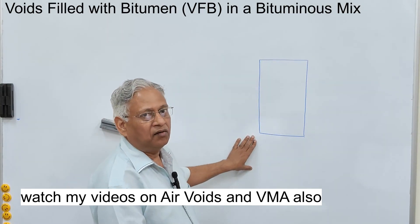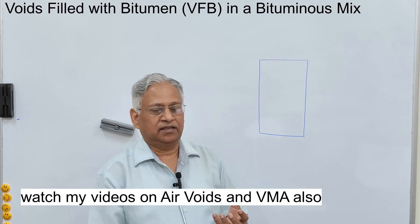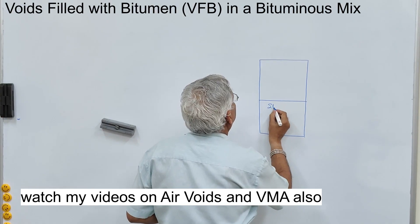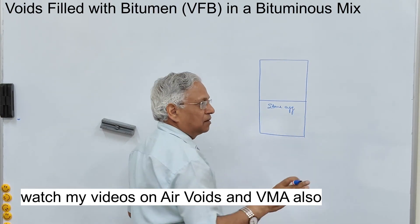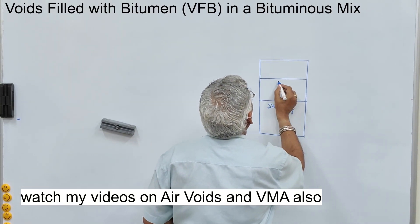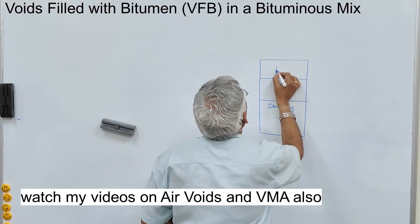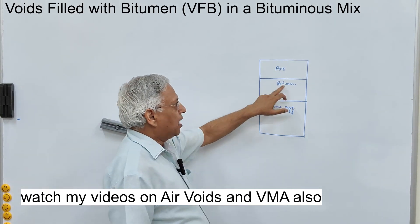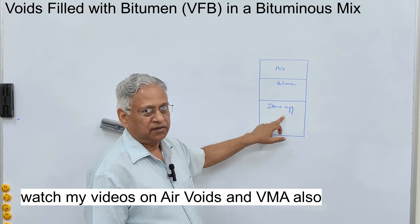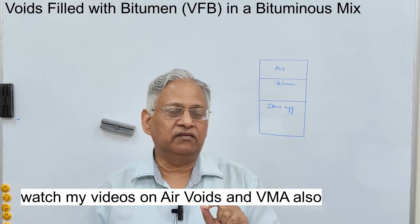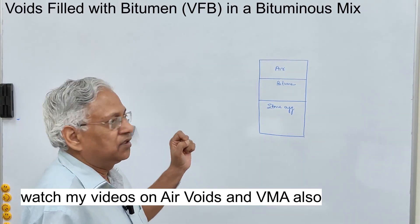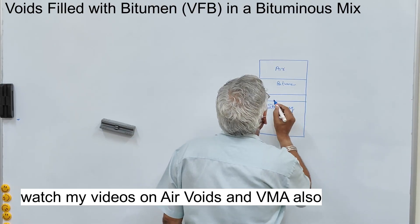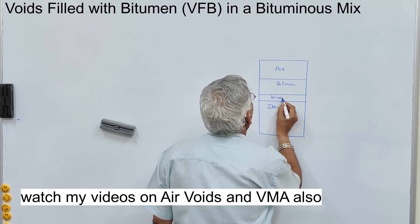Let us say this is the sample of a bituminous mixture. It will contain three components: aggregate, bitumen, and air. The stone aggregate is the major part of the mix, then you have bitumen, and then some air in the mix. Now, depending upon the property of these stone aggregates, a part of bitumen is absorbed by these aggregates. That depends upon the water absorption of aggregate — higher the value of water absorption, higher will be the binder absorbed by these stone aggregates.